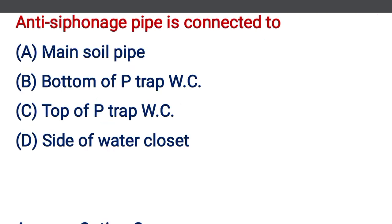The anti-siphonage pipe is connected to — option A: main soil pipe, option B: bottom of the P-trap water closet, option C: top of the P-trap water closet, option D: side of the water closet. The correct answer is option C, top of the P-trap water closet.